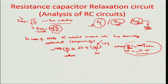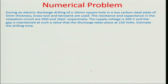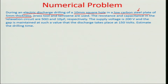Let us try a numerically oriented problem where we will estimate the total machining time. We have a circuit with known parameters feeding an EDM setup performing electro-discharge drilling, with the target of drilling a 10 mm square hole in a low carbon steel plate for which the Q-W relationship holds well. The plate has about 5 mm thickness and the tools are made of brass. Kerosene is the dielectric fluid in the inter-electrode gap.